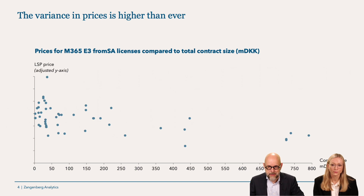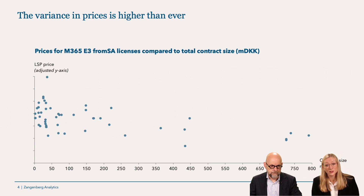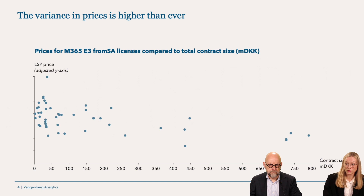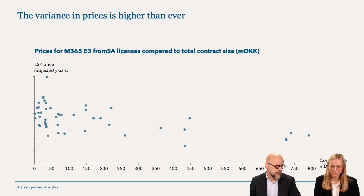We also have a plot showing the big variance in another way — this essentially shows how arbitrarily Microsoft prices their products. Even though a contract size is 750–800 million Danish crowns, some clients have gotten the same prices as a contract of 450 million. In summary, Microsoft will charge you based on your ability to negotiate and how much time you spend on it — they will be quite stubborn in their negotiation tactics.